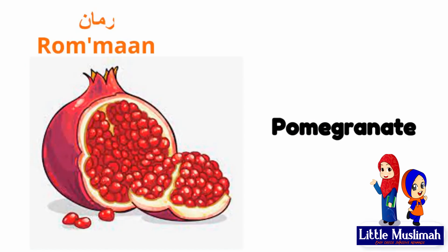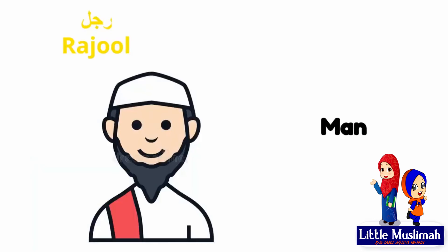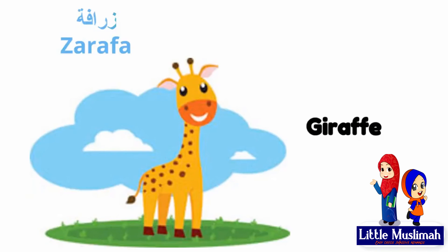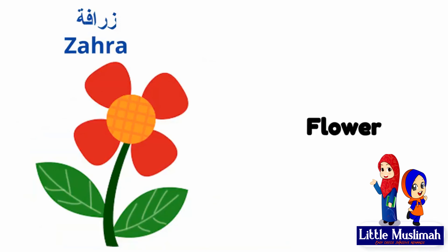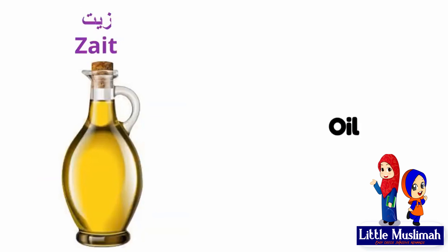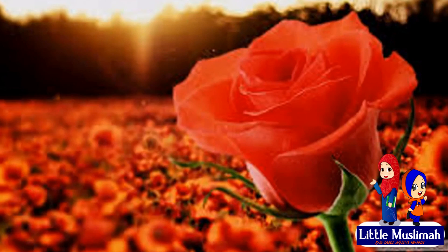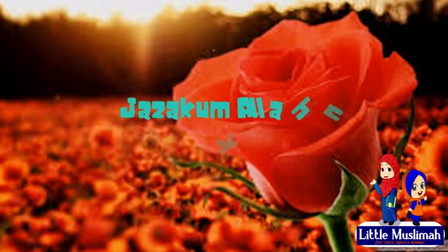Let's say it one last time. Reesh — feathers. Rumman — pomegranate. Rajul — man. Zuhur — flowers. Zarafah — giraffe. Zahra — flower. Zayt — oil. Practice well. Jazakum Allahu khayran.